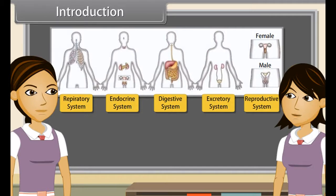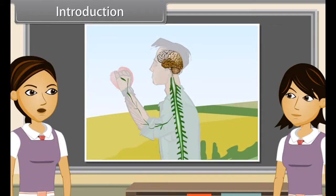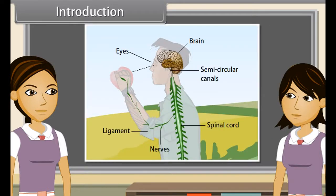All the organs of a system coordinate with each other so that the system can work properly. Coordination is the working together of the various organs in a systematic manner so as to produce a proper reaction to the stimulus.